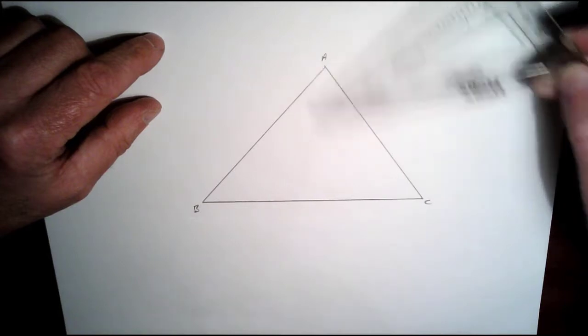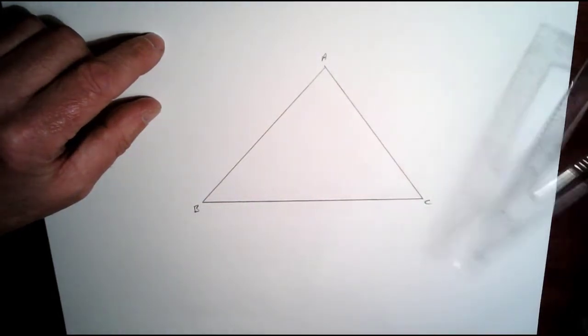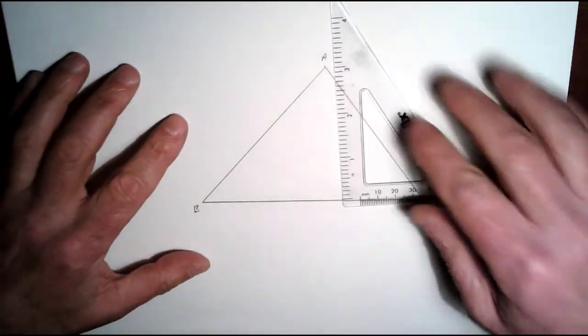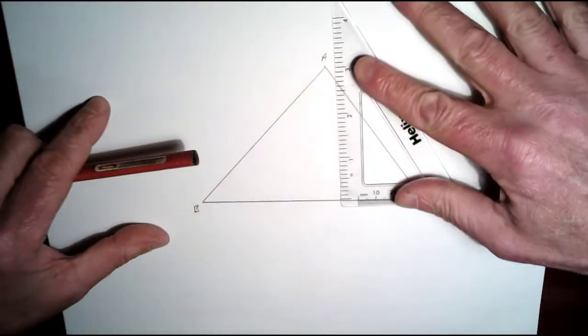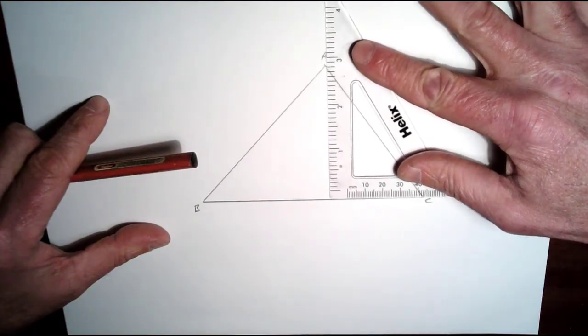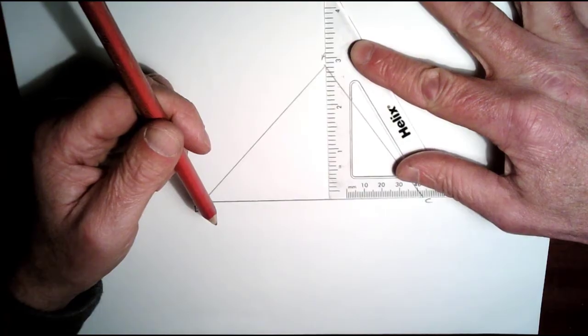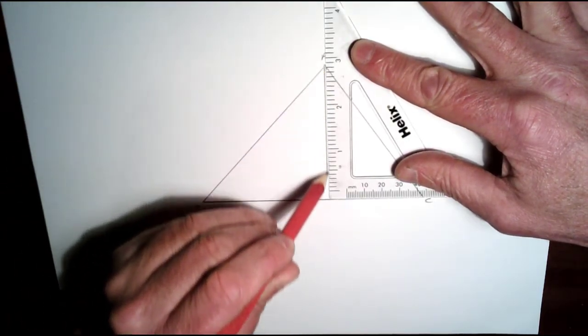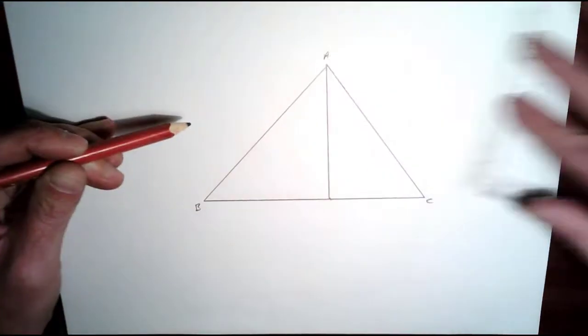In order to do that, we're going to use a set square. So the first thing we're going to do is just line the set square up along BC and at A, and we're going to drop a perpendicular line down to BC. So there's our first altitude—that's a right angle there.